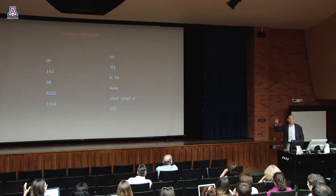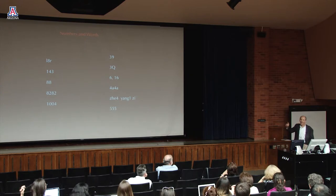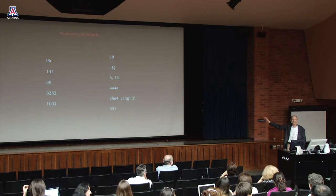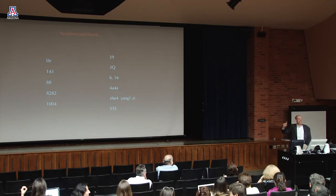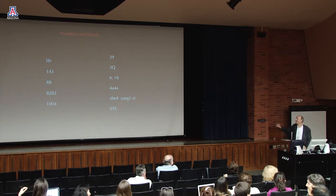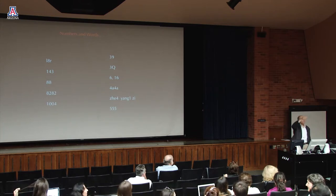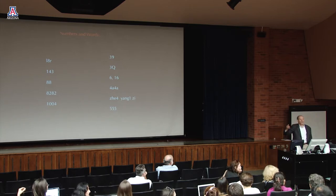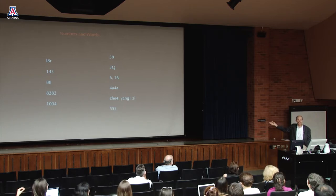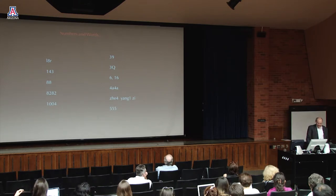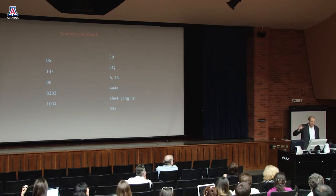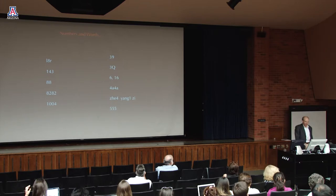In Thai, the number five is pronounced 'ha,' so 555 means 'ha ha ha' — laughing. In Chinese, 555 is pronounced 'woo woo woo,' which means crying. The moral is you need to know the relevant system behind the signs. And of course the Chinese have gone even further with these — there's even a hit song involving falling in love digitally with codes for different words.